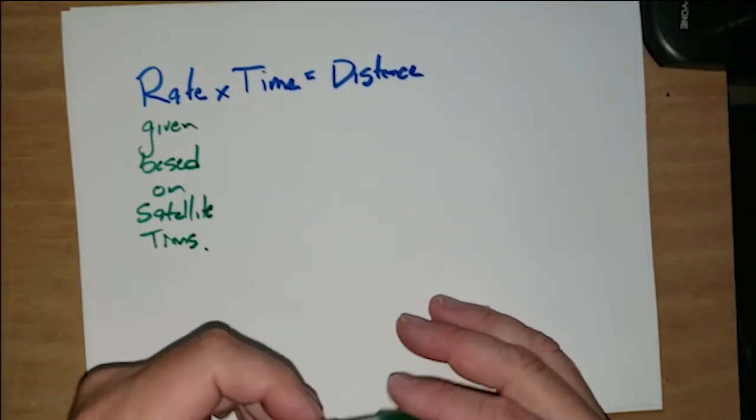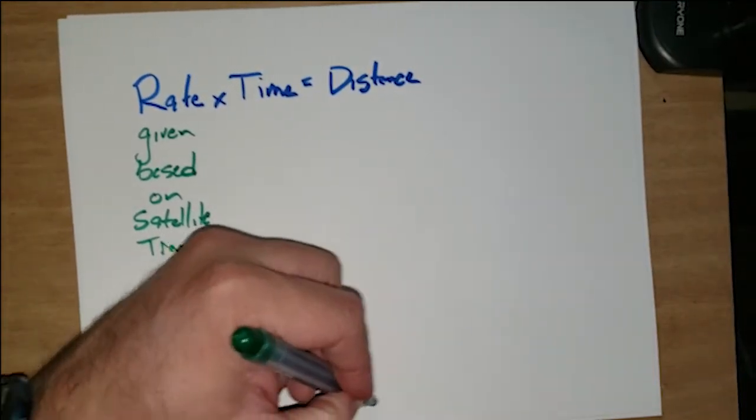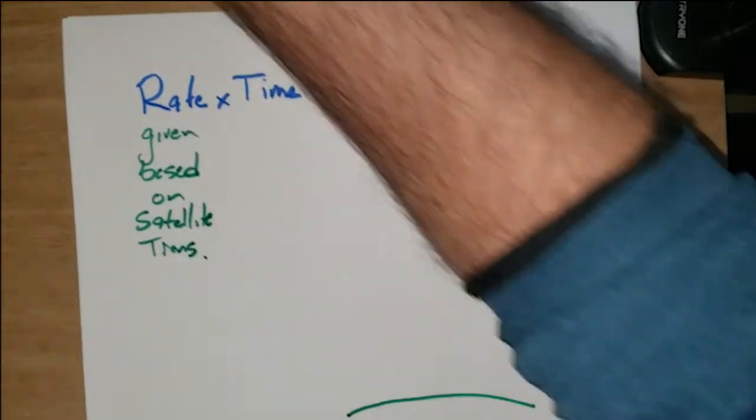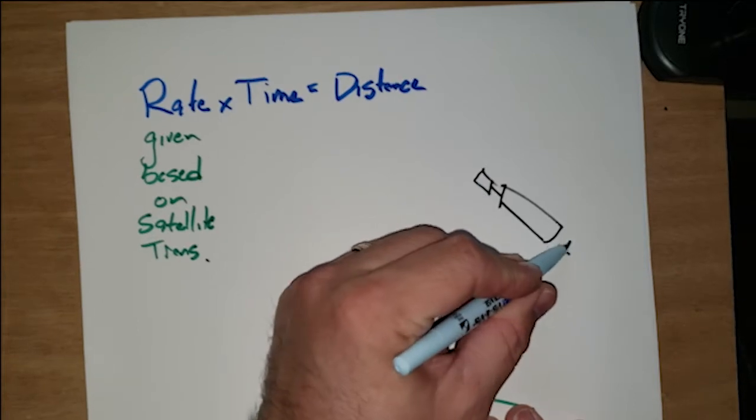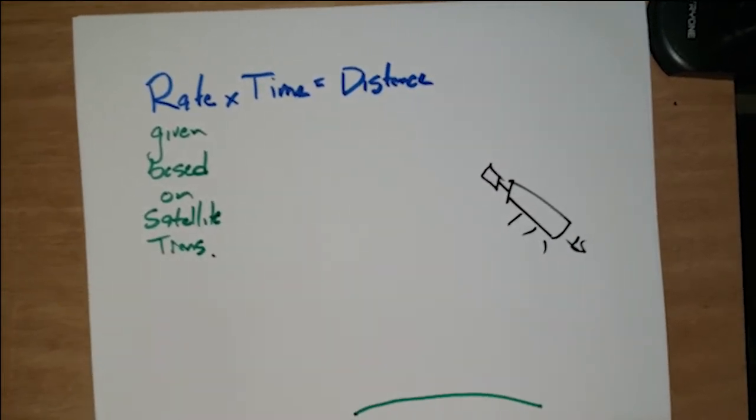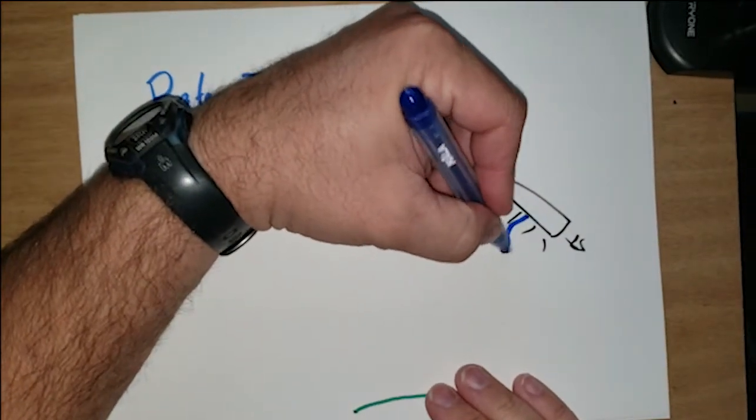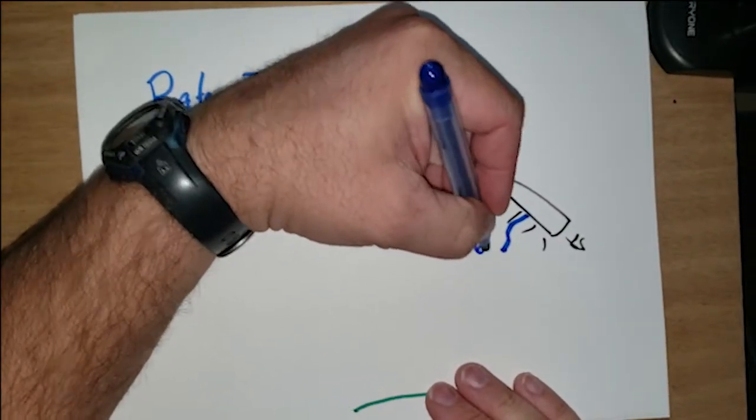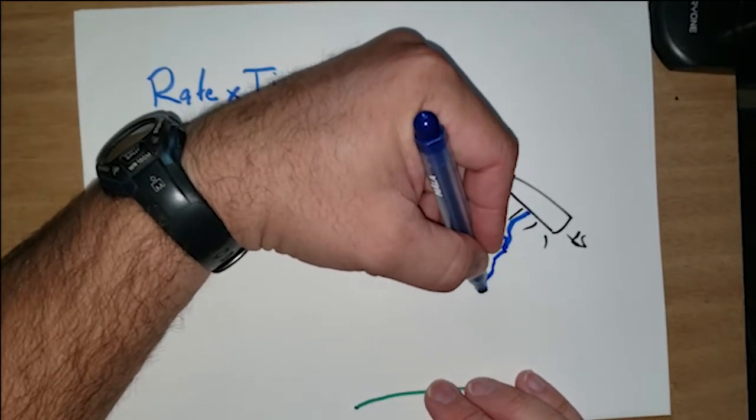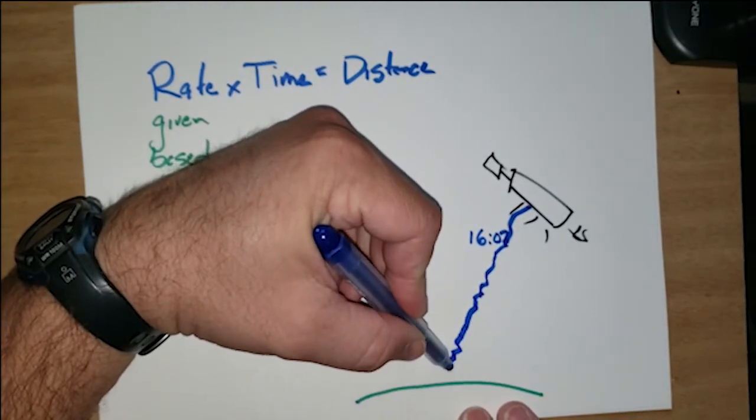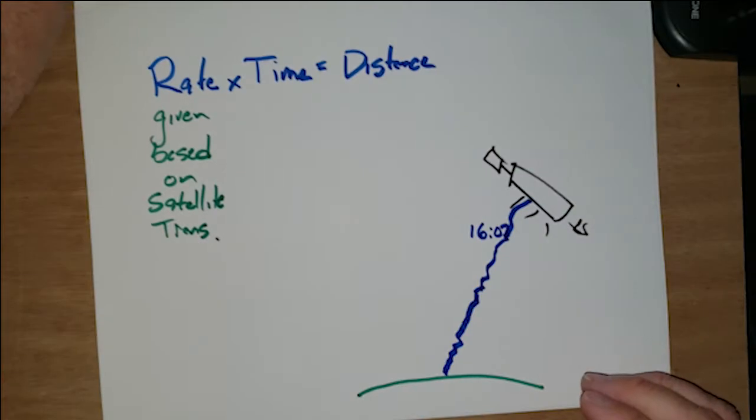How long is the time? And that's the big deal. So if we are down here on the surface of the Earth, and the satellite is up there sending down its message, let's say that we go back and it says, I'm sending the message right now, it's 16, that's going to be military time, 1607. And it finally makes it down to Earth at 1613.